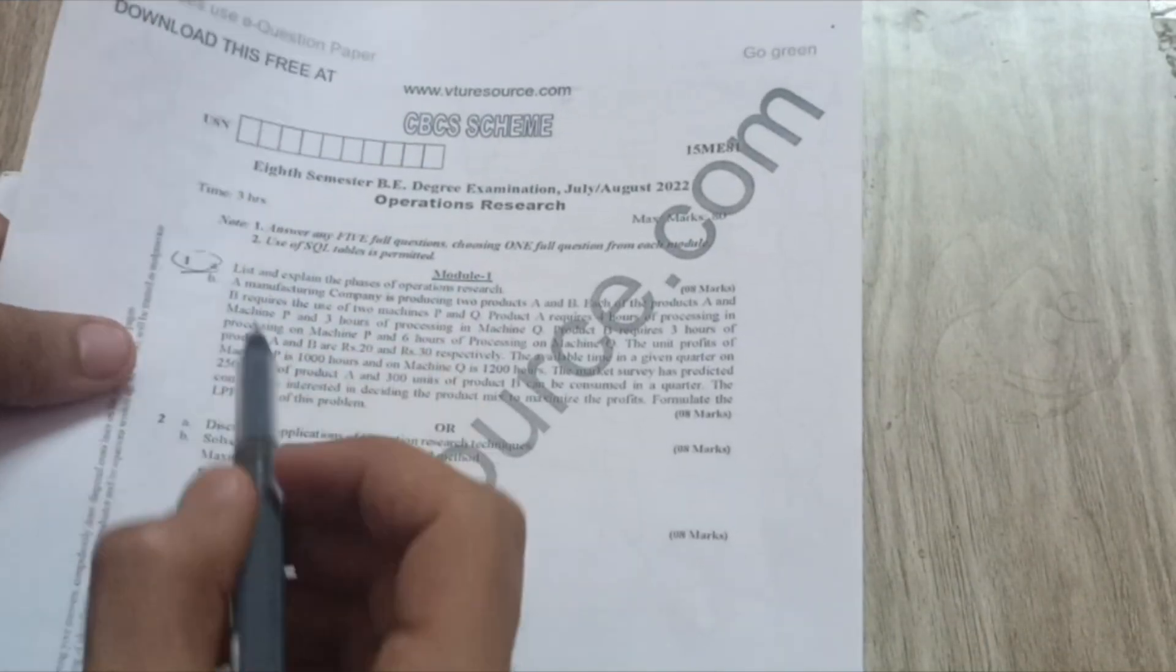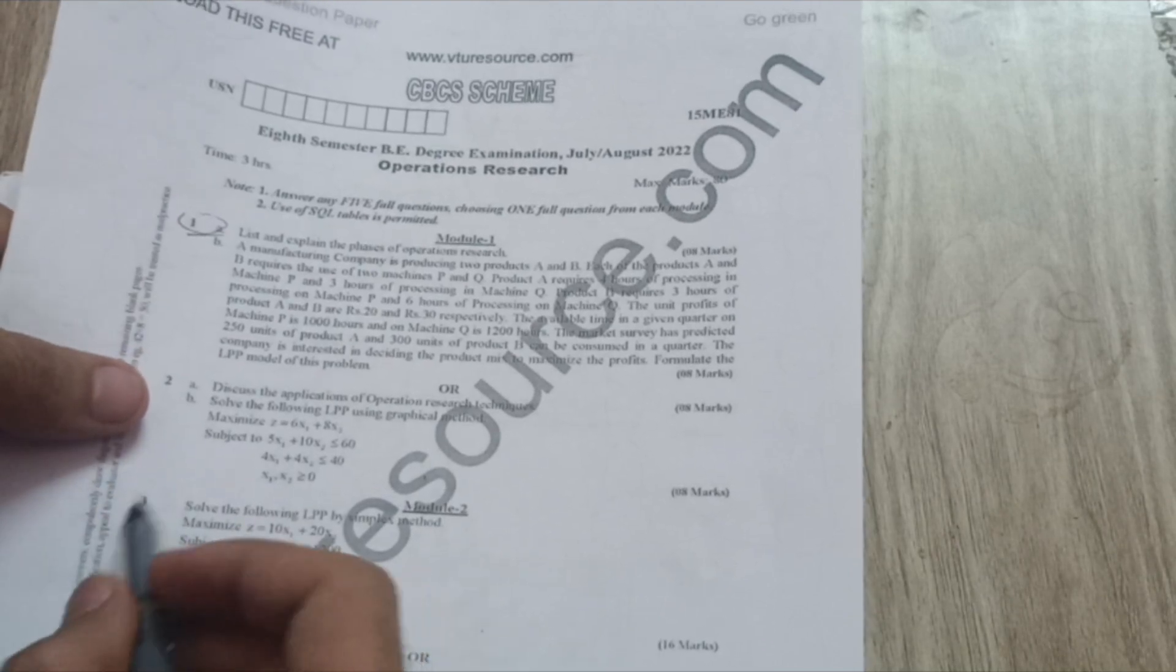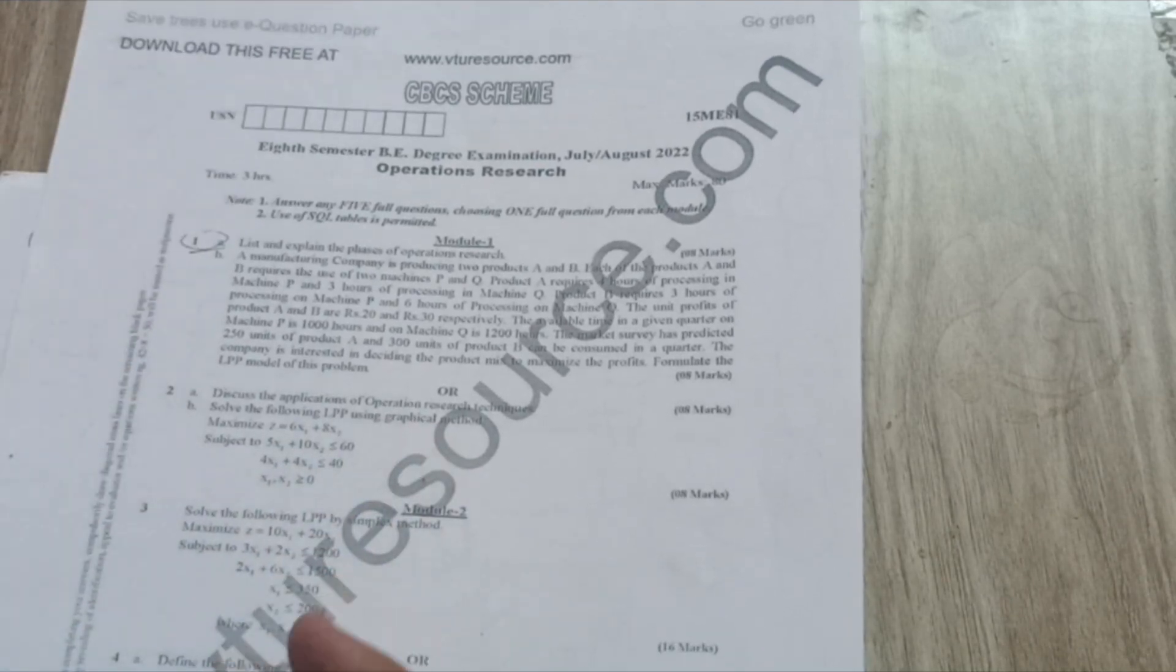First you write one A, then you are shuffling the question. Suppose module two, if you are having hold on the third question, go for three B or three A like that. Why shuffling is important in the examination?